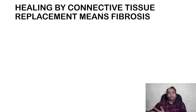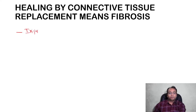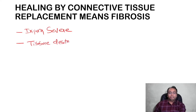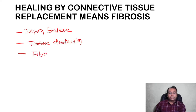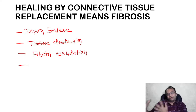The second variety is healing by fibrosis, which means there will be connective tissue replacement. It usually occurs when the injury is severe. Here there will be tissue destruction — for example, fibrinous inflammation in which there is fibrin exudation. So in this case, total restoration of normal tissue cannot occur and the damaged tissue needs to be repaired by fibrosis.